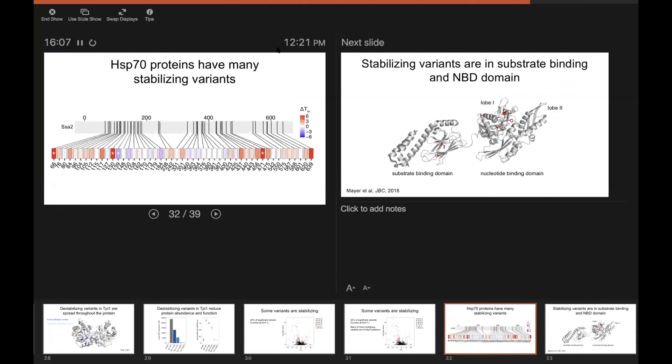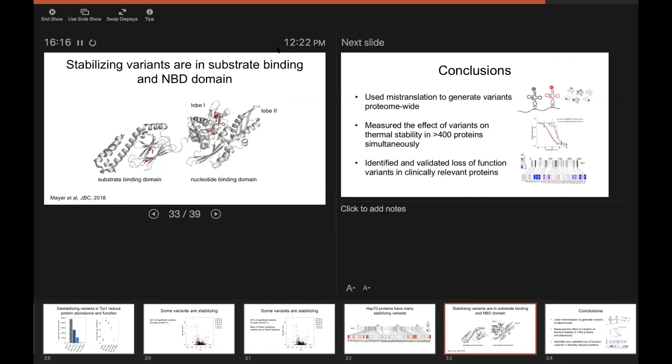We don't actually understand why there are so many apparently stabilizing variants in Hsp70 proteins, although we do have some hypotheses. But what's very interesting is when you map these variants onto the protein structure, they cluster in really two distinct areas of the protein, either this lobe one of the nucleotide binding domain or the beta sheets of the substrate binding domain, which are the part of the protein that actually contacts the peptide substrate.